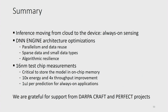High-level takeaways: there's a general trend to move inference from the cloud back to the device, driven by always-on sensing applications. The DNN Engine architecture exploits three properties: parallelism and data reuse, native sparse data operation with small data types, and algorithmic resilience. Measurements of our 16-nanometer test chip show it's critical to store the model in on-chip memory — going to DRAM blows the power budget. We demonstrated a 10x energy reduction and 4x throughput improvement, achieving around one microjoule per prediction for always-on applications. This work was supported by DARPA CRAFT and PERFECT projects.